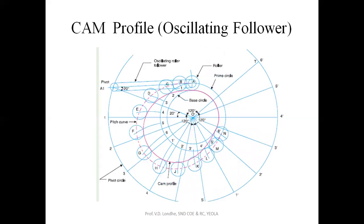Next is the cam profile for the oscillating follower. First, draw the base circle — the minimum radius of the cam. Then plot the pivot point location; in this problem it is given as 20 degrees. Mark the fulcrum or arm point at position A. From the pivot point, draw the reference line and take the rise and return angles from it. Here, 120 degrees is the angle of rise and 120 degrees is the angle of return; there is no dwell position — the dwell is zero.